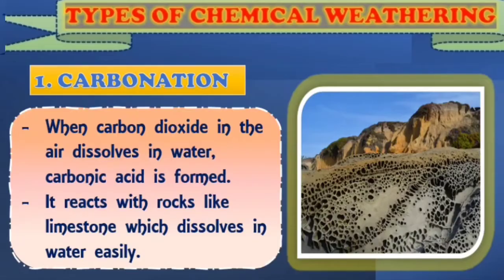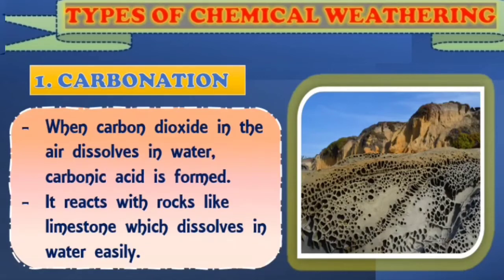When air combines with water, it forms a new substance which is carbonic acid. When carbonic acid comes in contact with rocks, it dissolves and removes some of the minerals in rocks and forms new compounds called carbonates. The formation of carbonate weakens the structures of rocks. For example, when water containing carbonic acid flows over limestone rocks, the carbonic acid may completely dissolve the minerals in limestone called calcite, and the calcite is carried away by the water. As a result, the structure of limestone weakens and may easily be broken by other weathering processes.